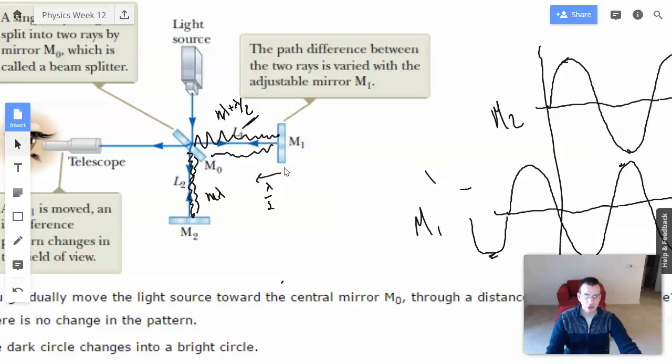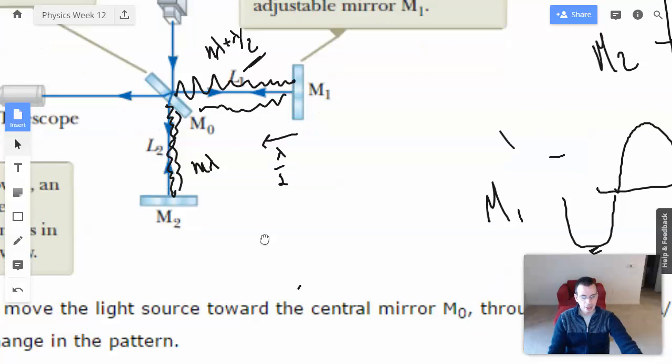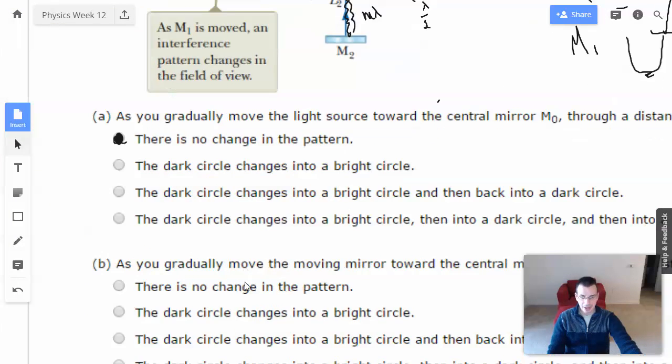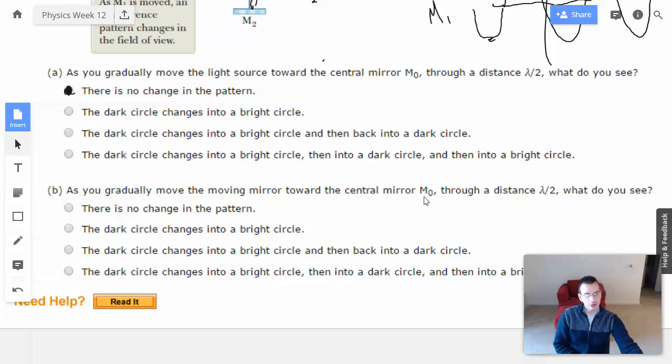And that's because the total distance traveled by this wave is going to be one full wavelength. And you can see that because you have one arrow pointing this way and one arrow pointing that way, saying that it's a double path. So as you gradually move the moving mirror toward the central mirror through a distance of wavelength over two, what do you see? The dark circle changes into a bright circle and then back to a dark circle. That's the answer.